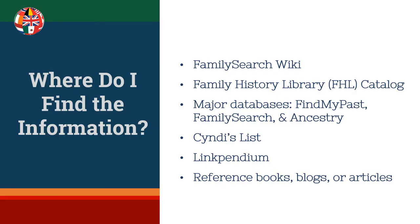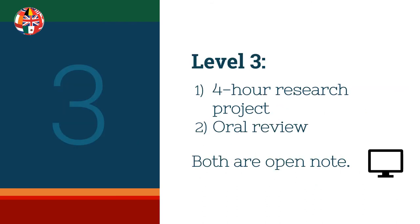To find information for your reference guides, favorites include the FamilySearch Wiki — a gold mine of information — the Family History Library Catalog, databases like FindMyPast, Ancestry, and FamilySearch, Cyndi's List, Linkpendium, various reference books, and different blogs and online sources. Once you pass both level two exams, you'll move on to level three.